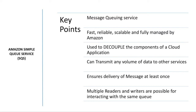It has to be scalable because as more consumers and producers get added, you want it to handle those activities. The good part is this service is completely managed by AWS, so the headache is entirely on AWS to manage all these activities. It is used to decouple components, transmit any volumes of data, and ensures delivery of a message at least once. Multiple readers and writers are possible for interacting with the same queue.